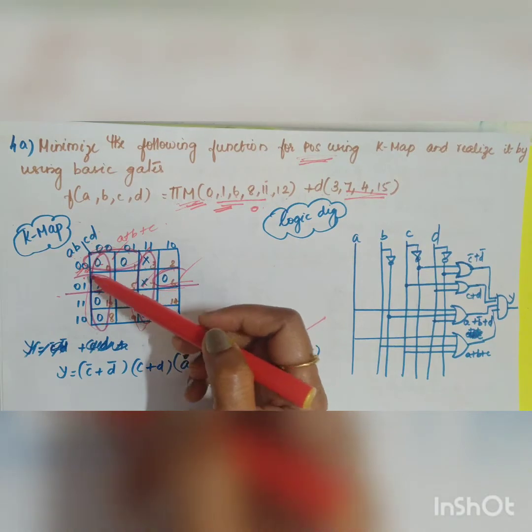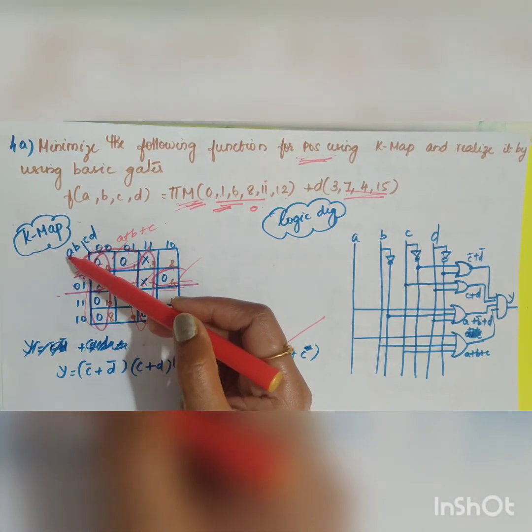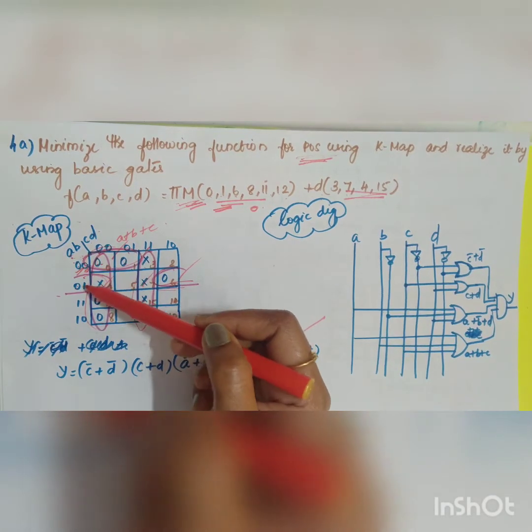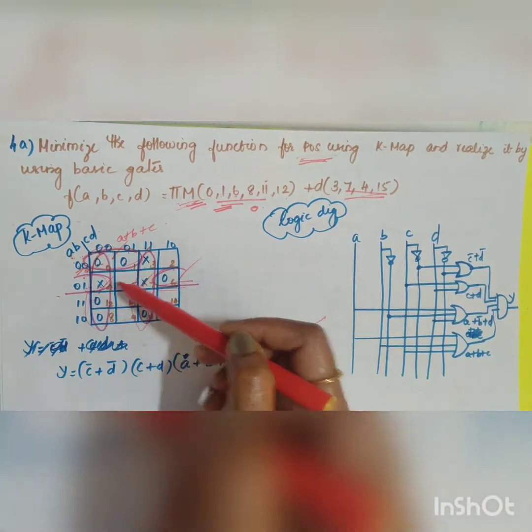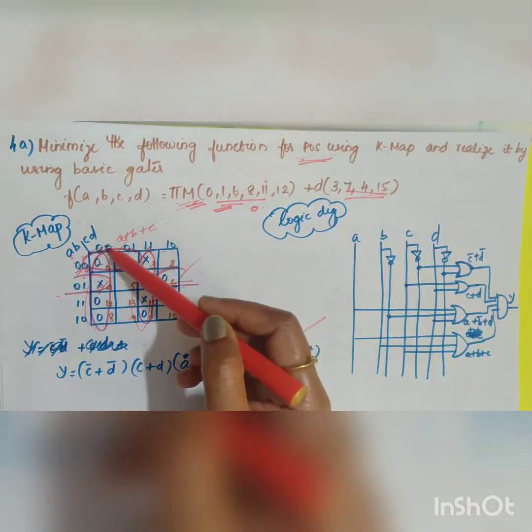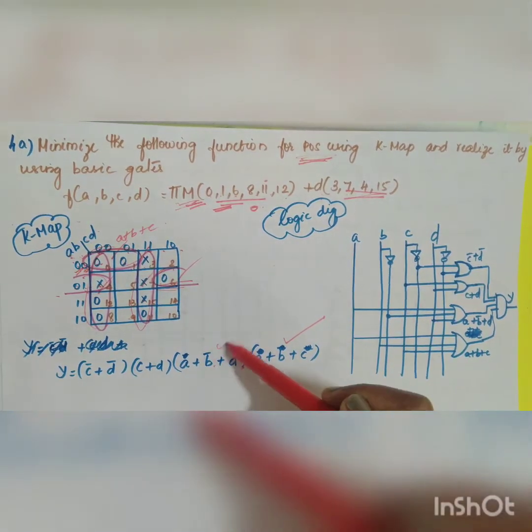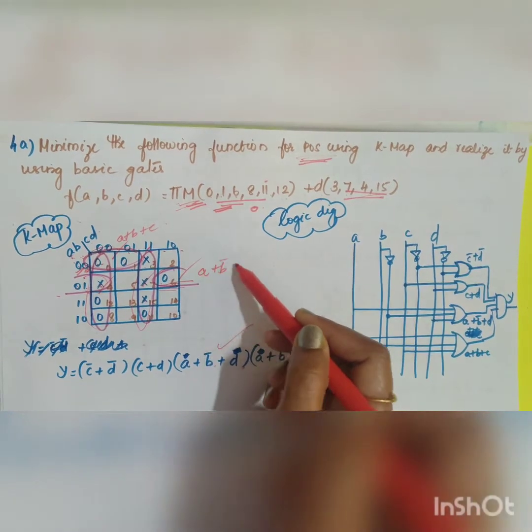Let us take the second one. Here it is 0. You will be taking it as a. A. B bar. A plus b bar plus. These two values 0 and one will get cancelled. You have 0. A plus b bar plus d. That will be giving your second factor. This is a plus b bar plus d.